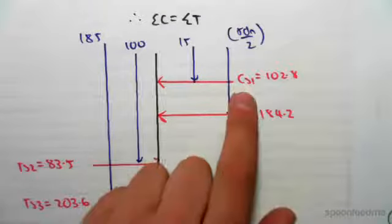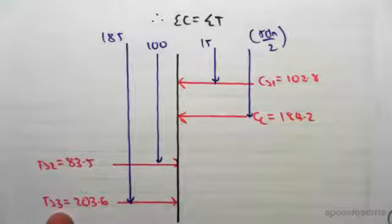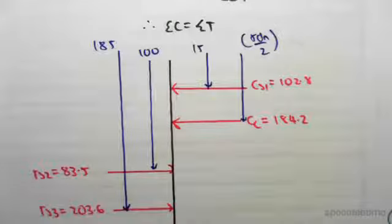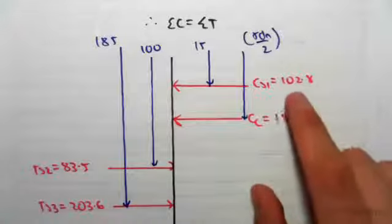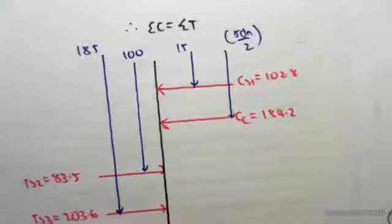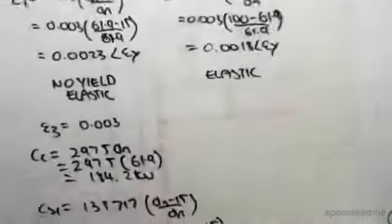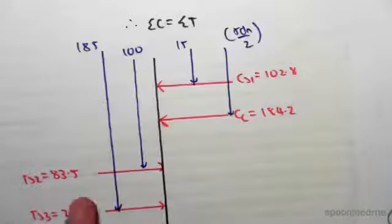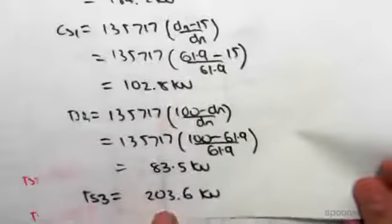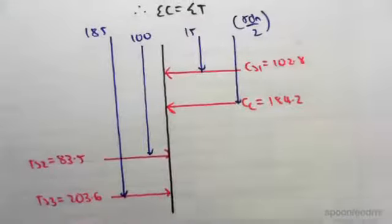We have compression steel one, tensile steel two, tensile steel three. Now they obviously have these values, which we've found. So compression steel one, 102.8 kilonewtons. Tensile steel two, 83.5 kilonewtons. Tensile steel three, 203.6 kilonewtons.